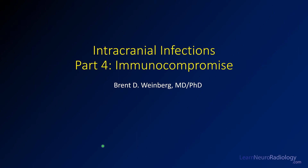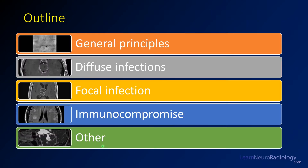The fourth video in this series on intracranial infections is going to talk about special considerations in immunocompromised patients. In the previous videos, we've talked about general principles in evaluating infection, some diffuse infections such as encephalitis and ventriculitis, and focal walled-off infections or abscess. In this video, we'll talk about special considerations in immunocompromised patients.